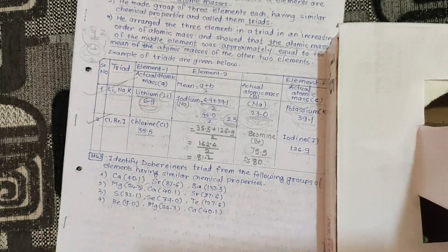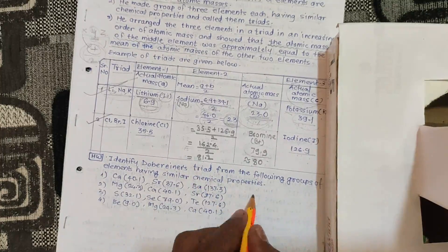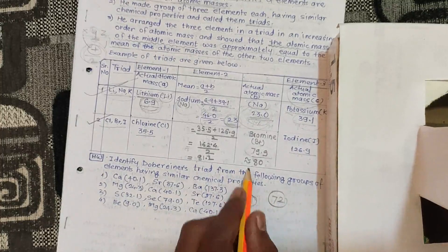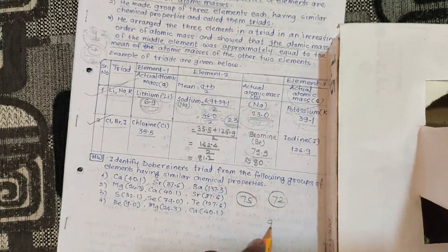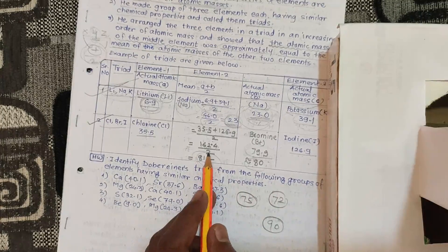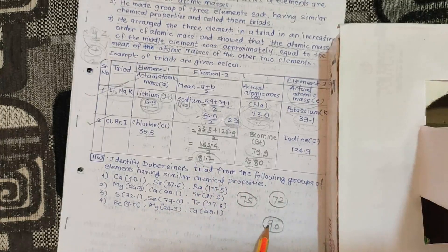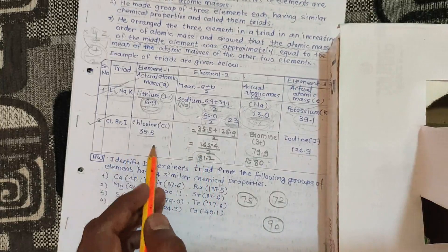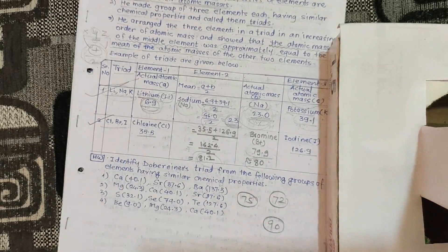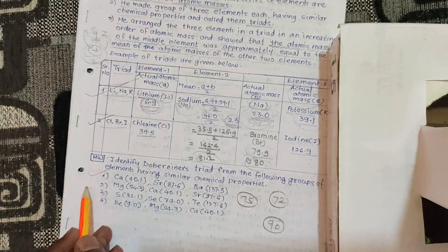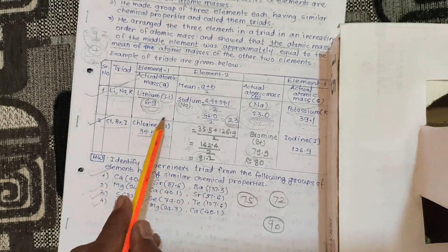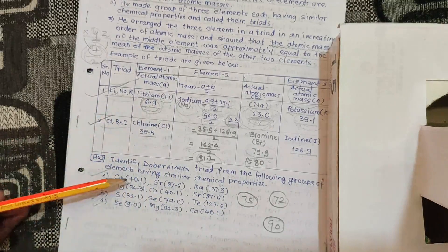But agar yahan par value aata 75, ya 72, ya middle element 80 hai but humein value mila 90 — tab hum bolte ki Döbereiner Triad nahi hai. Toh aapko yeh example lena hai — yeh char examples aapko solve karne hain aur check karna hai isi method se ki yeh Döbereiner Triad hai ki nahi.